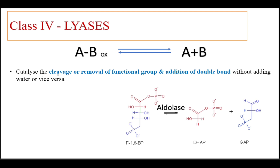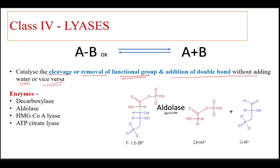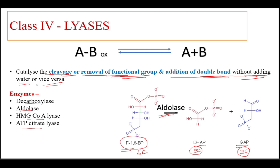Class 4: lyases. This group of enzymes catalyze the cleavage or removal of a functional group and addition of a double bond without adding water, or vice versa. Examples include decarboxylases, aldolase, HMG-CoA lyase, and ATP-citrate lyase. In this example, aldolase is classified under lyases and is involved in breaking fructose-1,6-bisphosphate, a 6-carbon compound, into two 3-carbon compounds: dihydroxyacetone phosphate and glyceraldehyde phosphate. This cleavage occurs without adding water.